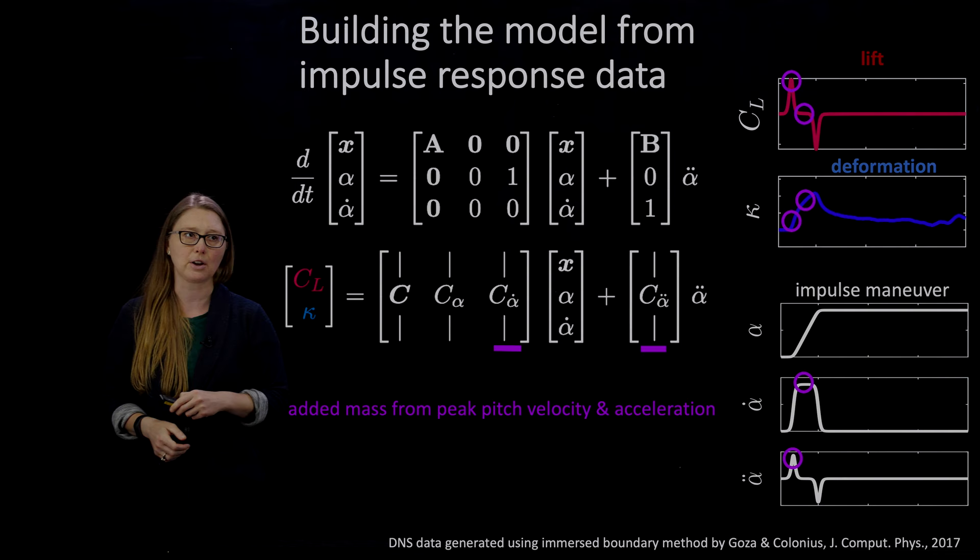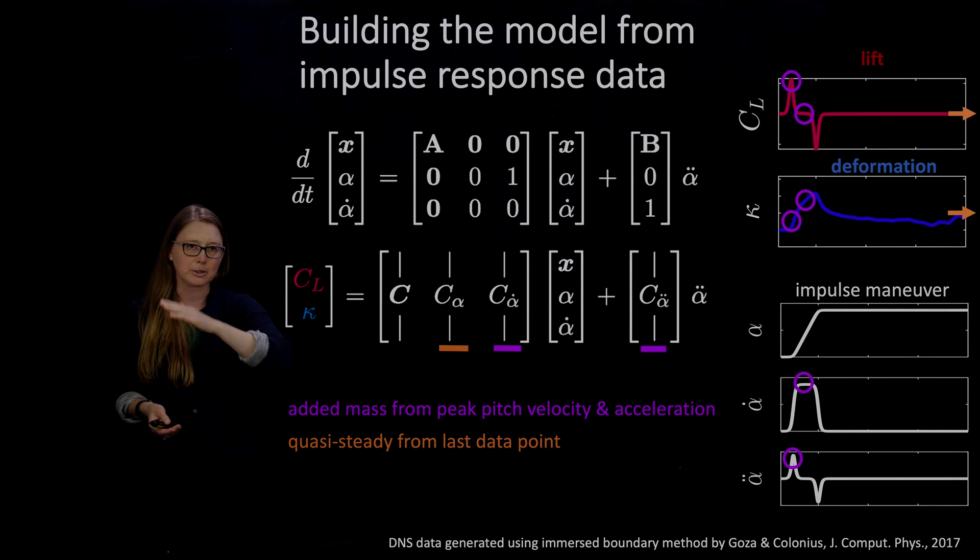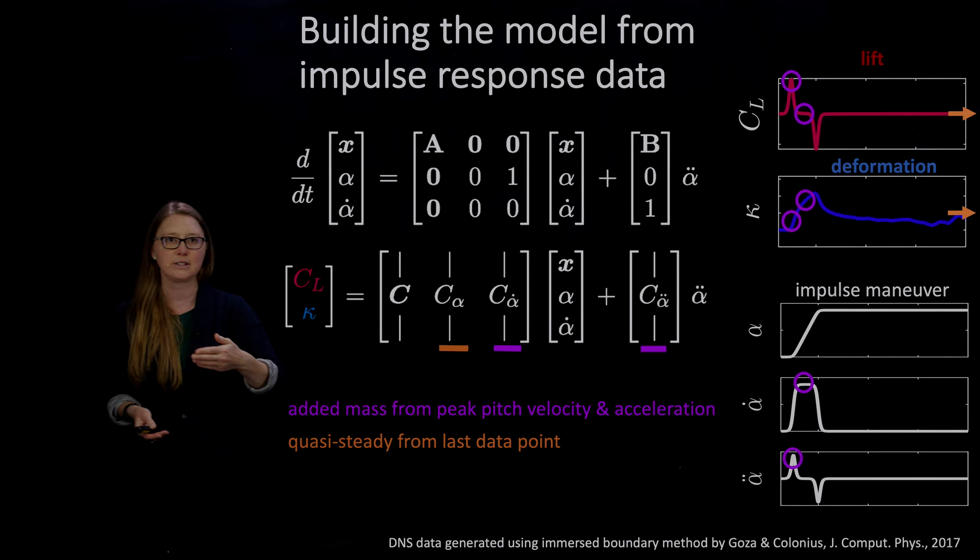Those orange arrows over there, those are telling you that if you go to the very end of the time series, when everything's settled down, no more wibbly wobblies, that's where we're going to get our quasi-steady coefficient, which makes sense because we need it to be quasi-steady. If I showed you the data from there, it would be very flat and boring because that's what we need for quasi-steady.